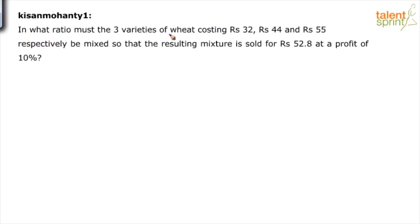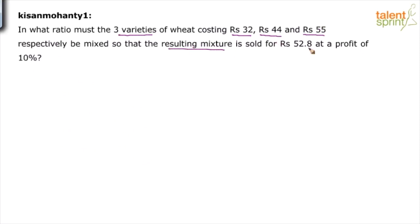In what ratio must three varieties of wheat costing ₹32, ₹44, and ₹55 respectively be mixed so that the resulting mixture is sold for ₹52.8 at a profit of 10%? So basically there are three varieties of wheat with costs ₹32/kg, ₹44/kg, and ₹55/kg. We need to find the ratio to mix them to get a mixture that when sold at ₹52.8 gives a profit of 10%.